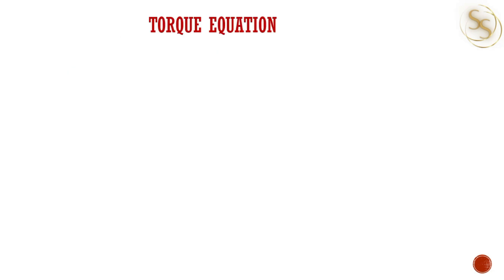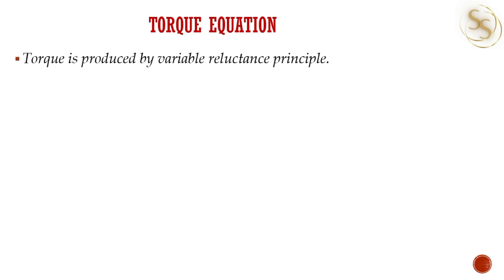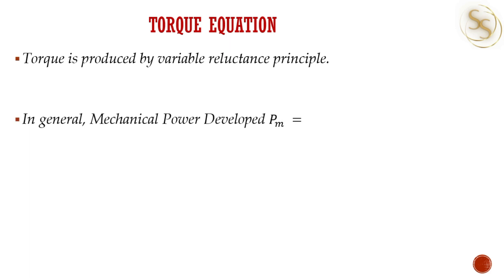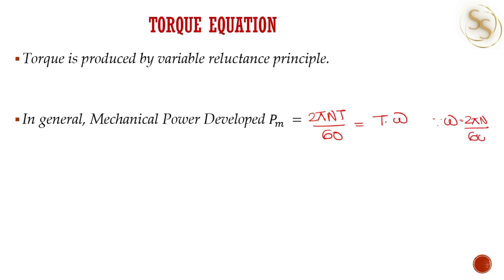Let's move on to the torque equation. In a switched reluctance motor, torque is produced by the variable reluctance principle. In general, the mechanical power developed by a machine, P_M, is given as 2πnT/60, which can also be written as T times omega, since omega equals 2πn/60.